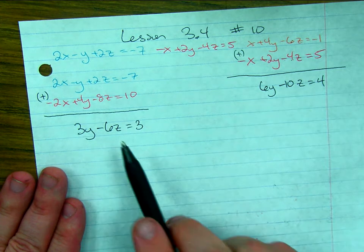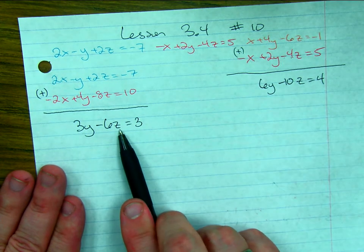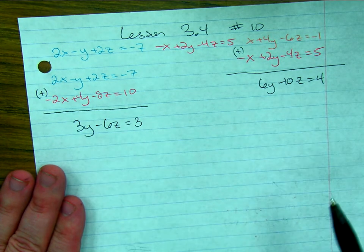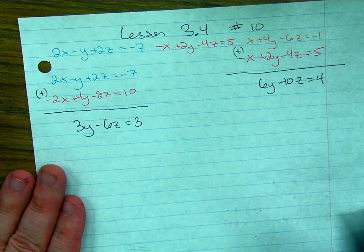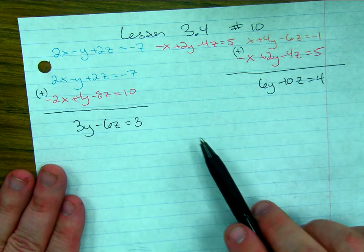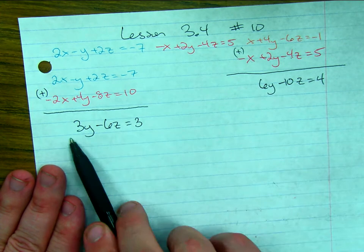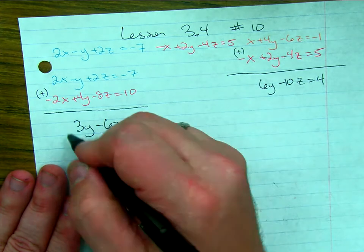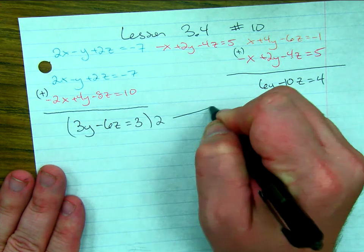I now have one equation that has a y and a z. A second equation that has a y and a z. So I'm going to try to match them up. I'm going to decide, in this instance, to eliminate the y's. I'm going to do that by multiplying this entire equation by 2.